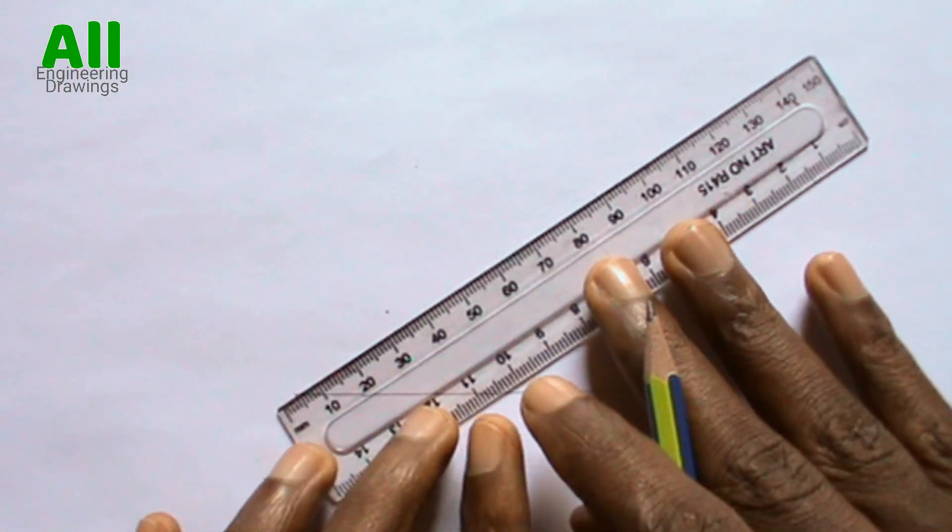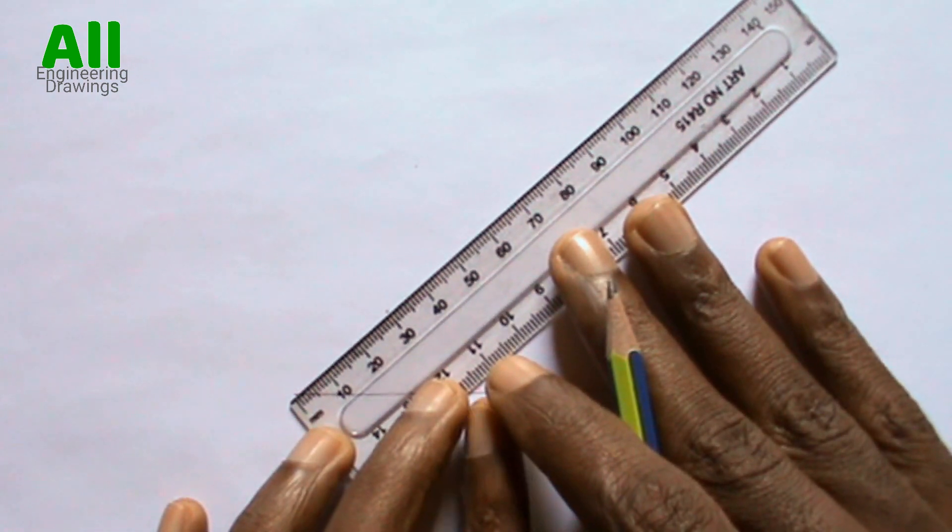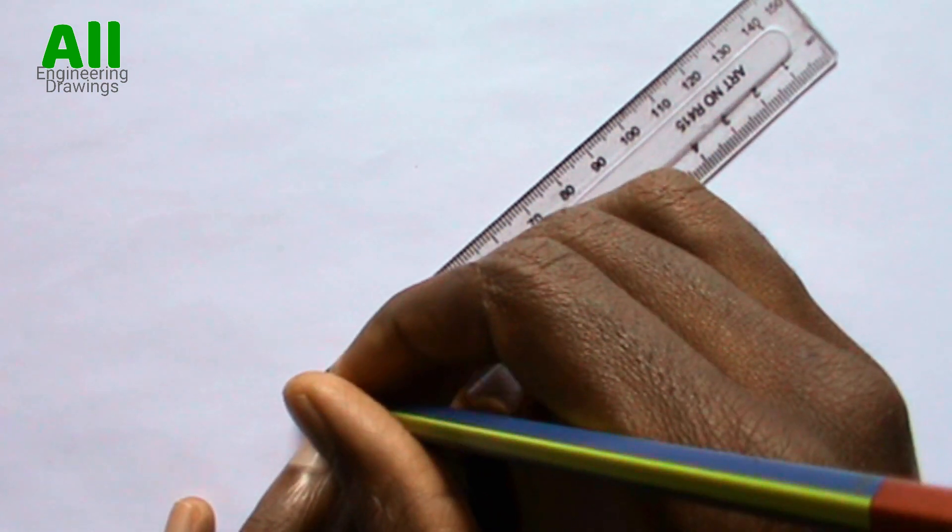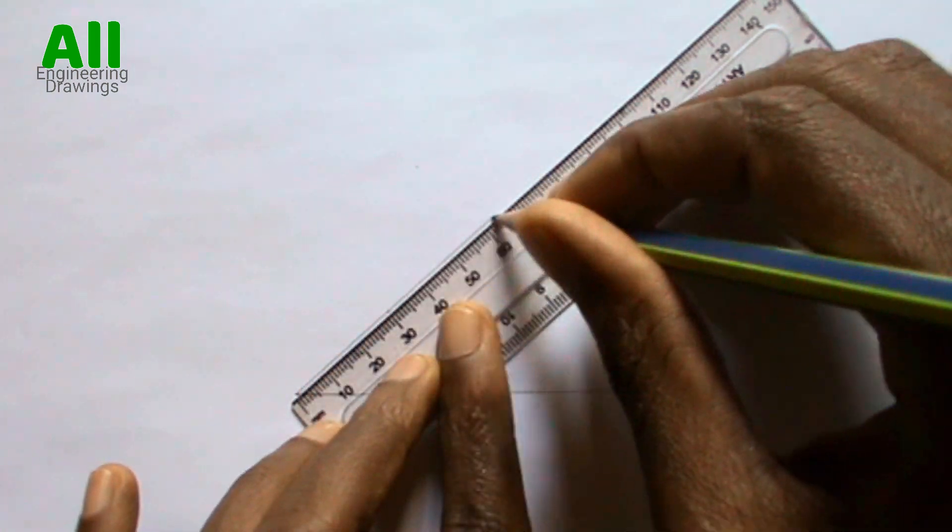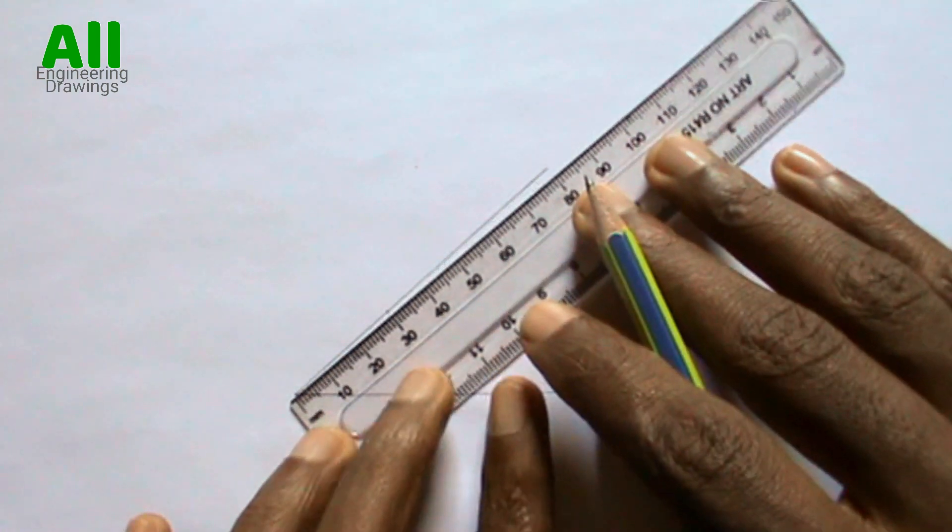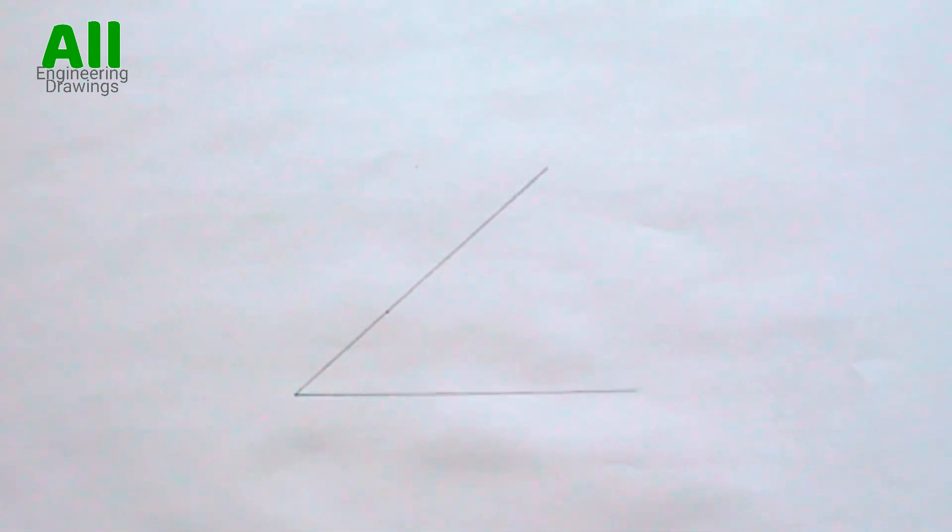Then you have to draw a line from the end where you placed your protractor passing through the points you marked. The angle has been drawn successfully. You can label it.